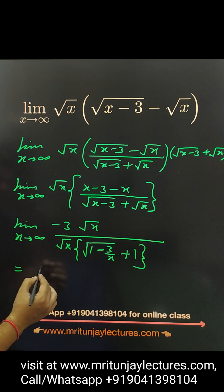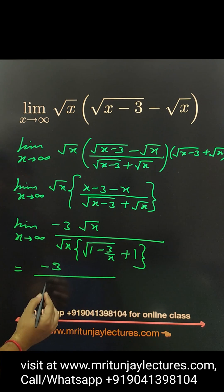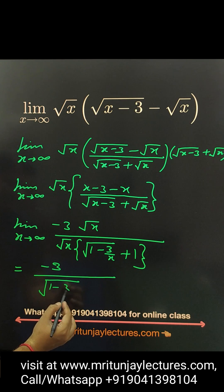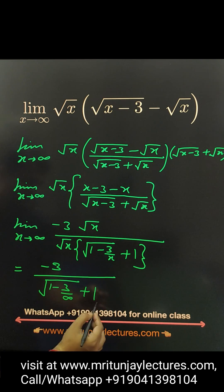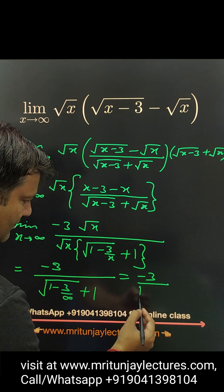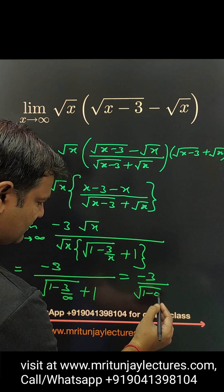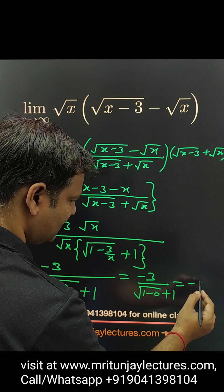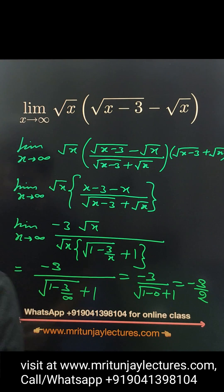And put x equal to infinity. Then we got minus 3 divided by 1 minus 3 under root, 1 minus 3 by infinity plus 1. So minus 3 divided by 1 minus 0 plus 1. So basically minus 3 by 2 is the right answer.